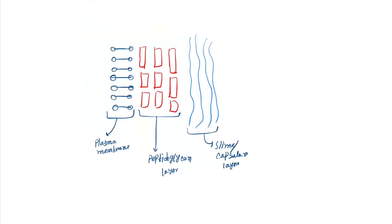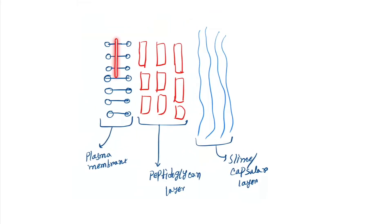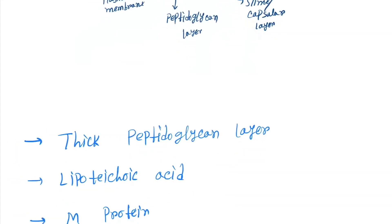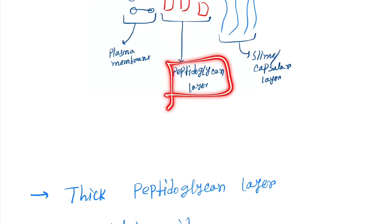So here also a picture is drawn. You can see the plasma membrane, peptidoglycan layer, and the capsule. First one is the thick peptidoglycan layer.